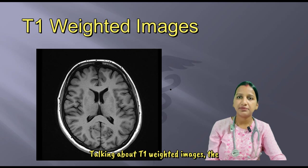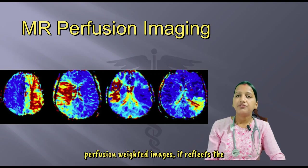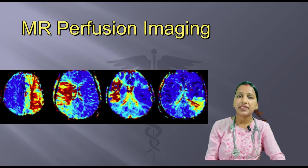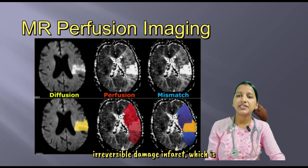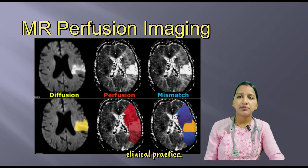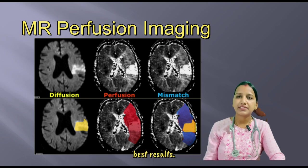T1-weighted images are used primarily for anatomical evaluation. Regarding perfusion MRI — perfusion-weighted images — this reflects the overall area of hypoperfusion, including the ischemic penumbra, whereas diffusion-weighted images reflect the irreversible damage, which is termed a mismatch between these sequences. However, in current clinical practice, Tmax and mean transit time appear to give the best results.